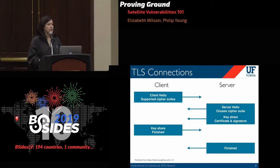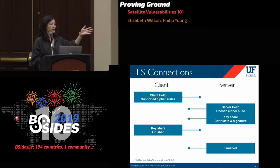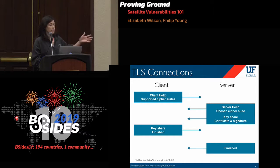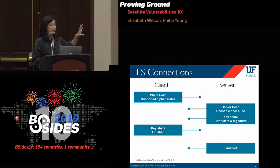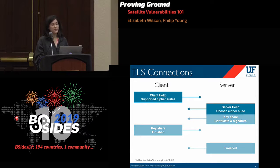In a TLS connection, when a client wants to connect to a server, it sends a Client Hello along with a list of cipher suites that the client supports. The server receives this, sends a Server Hello, and chooses the strongest cipher suite they have in common with the client to encrypt with. For purposes of our research, we don't care about what happens after this.